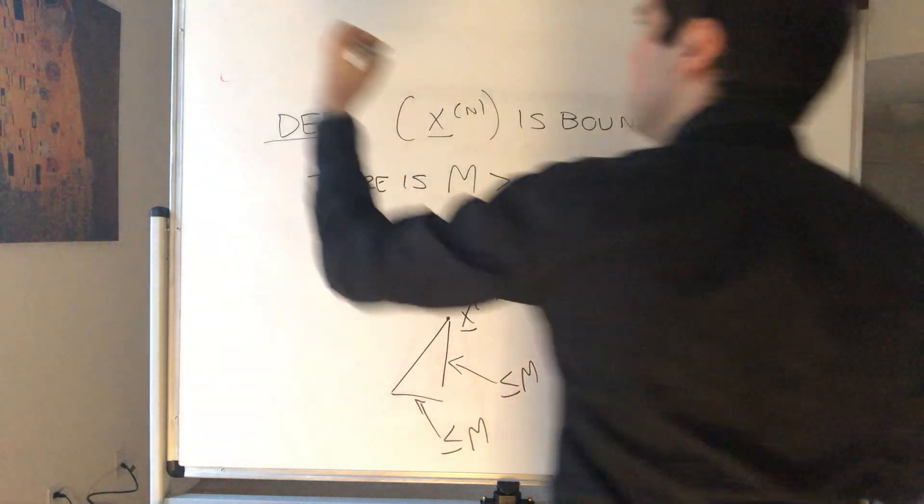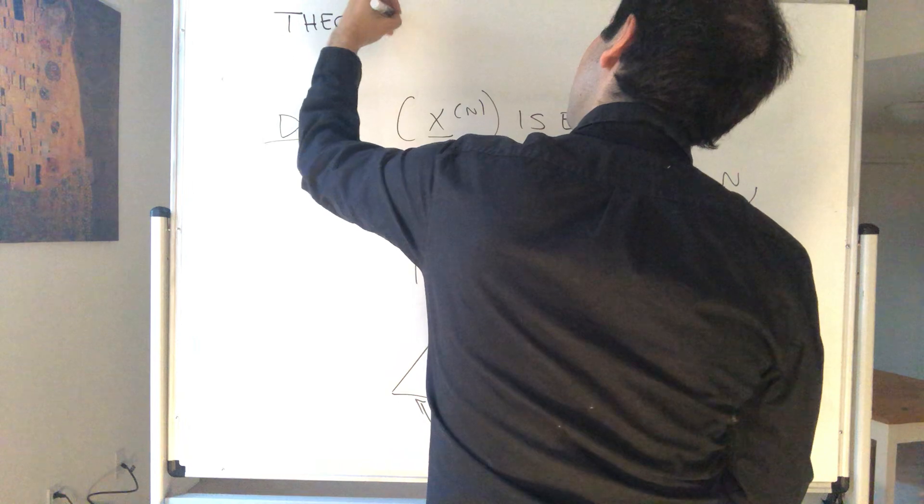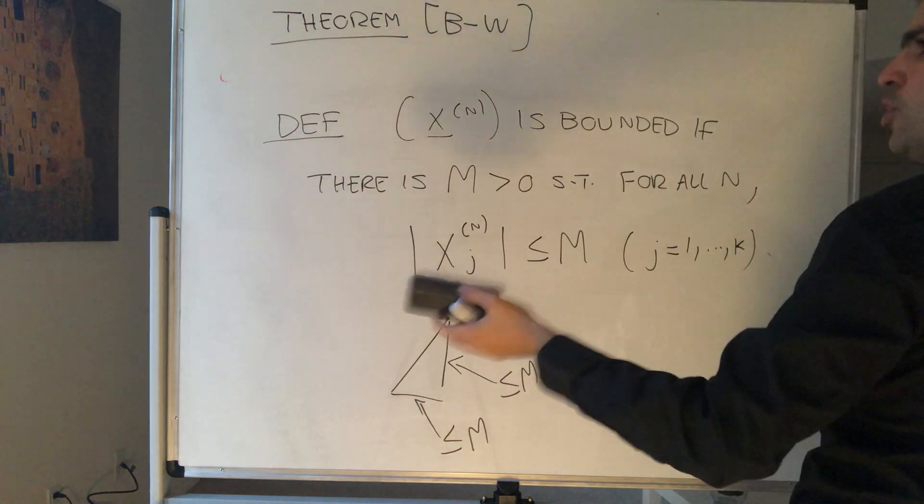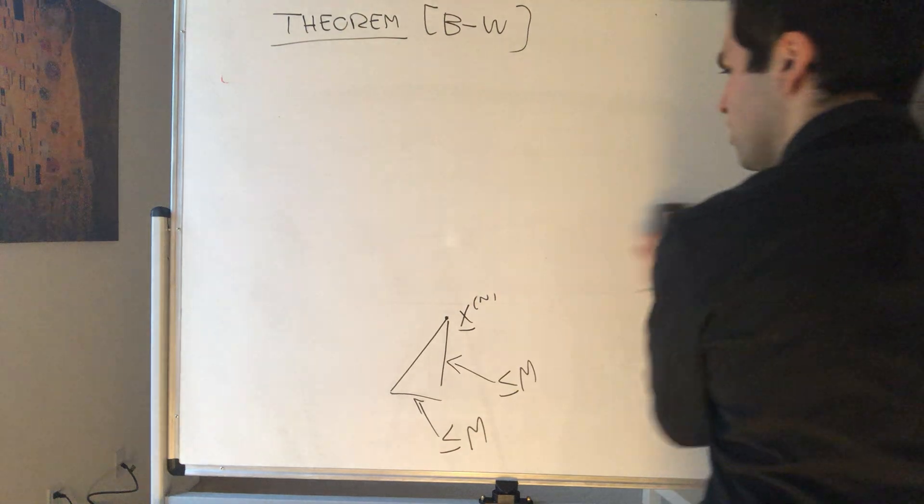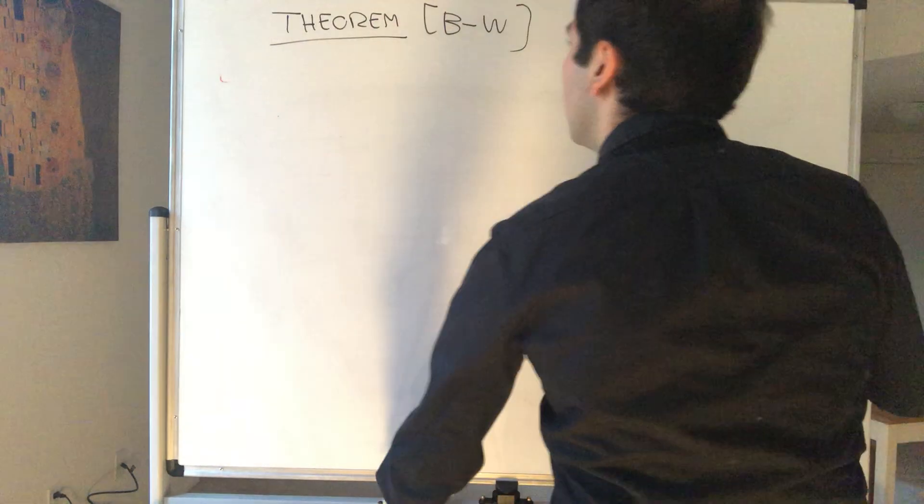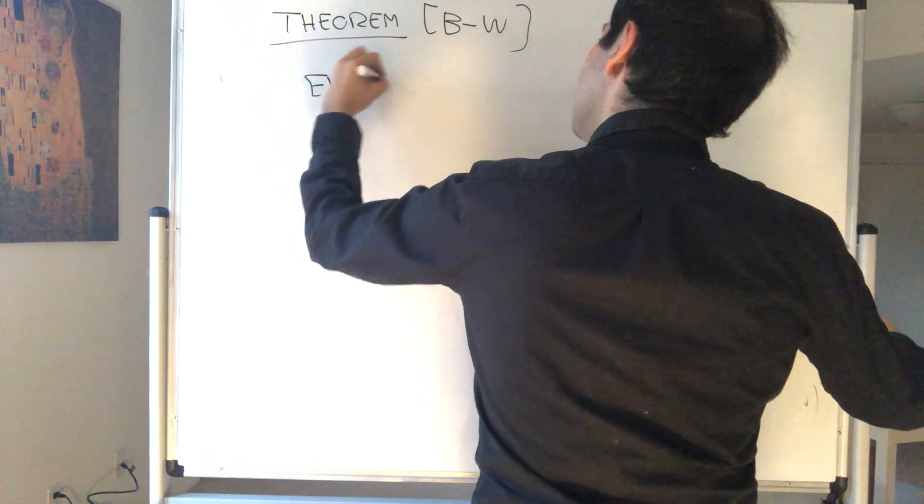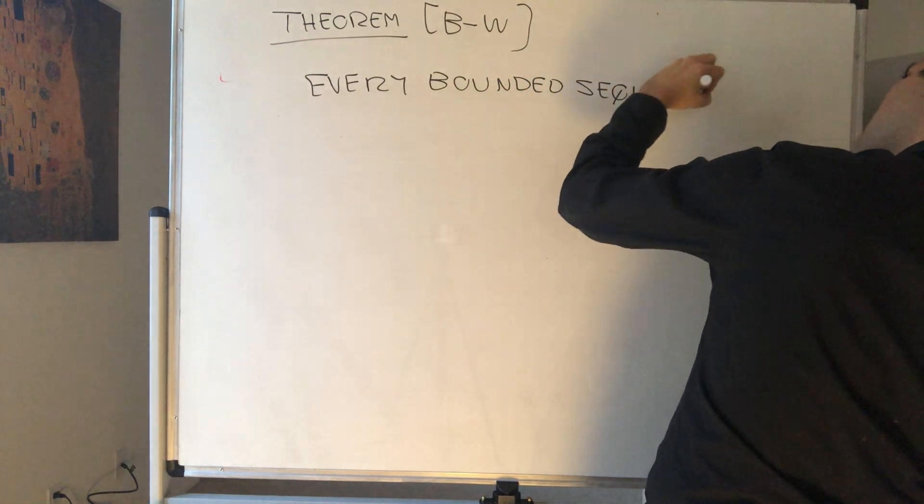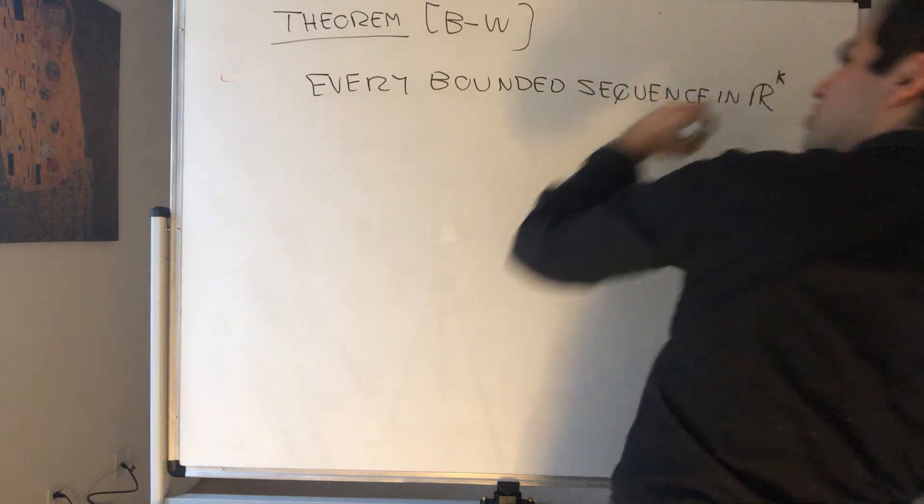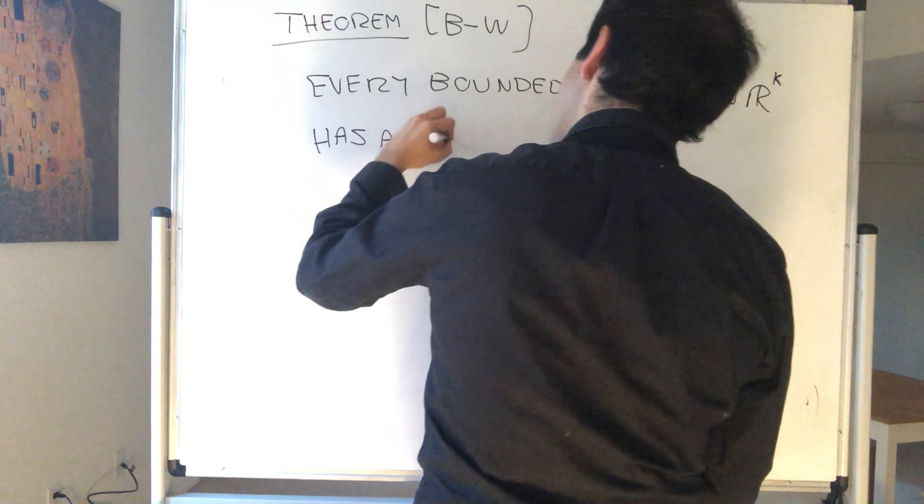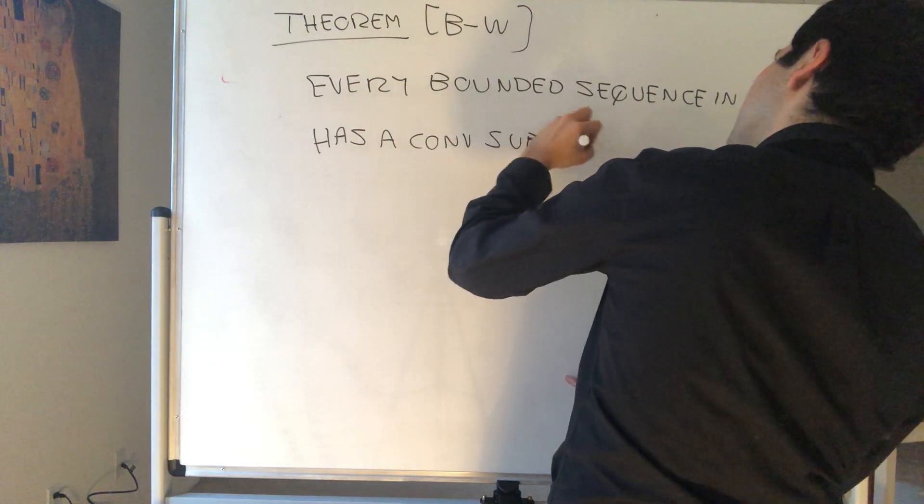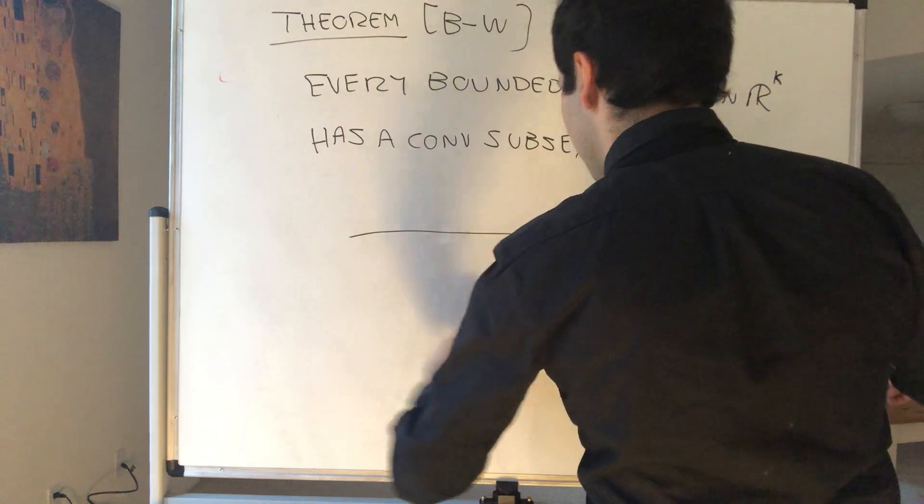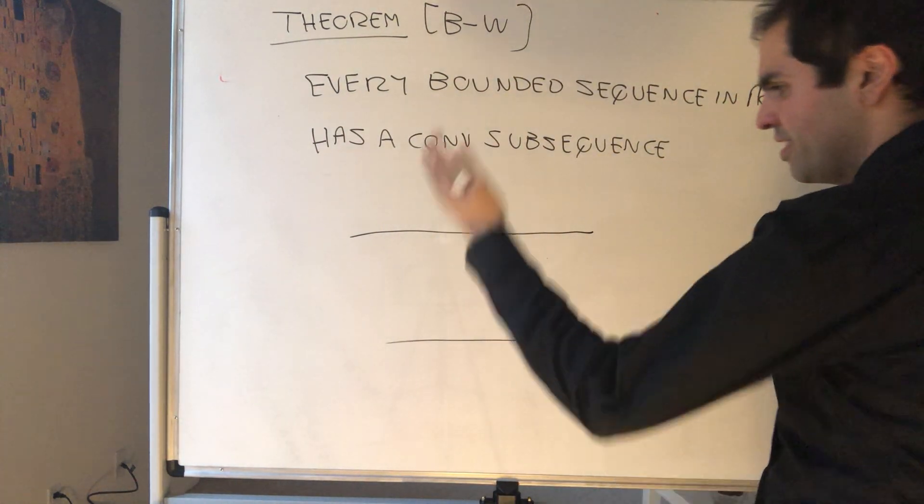We're here to prove the theorem. Namely, every bounded sequence in R^k has a convergent subsequence. So every bounded sequence in R^k has a convergent subsequence.